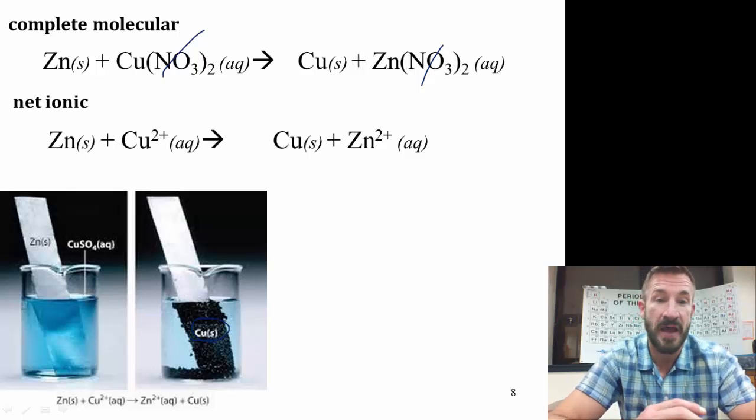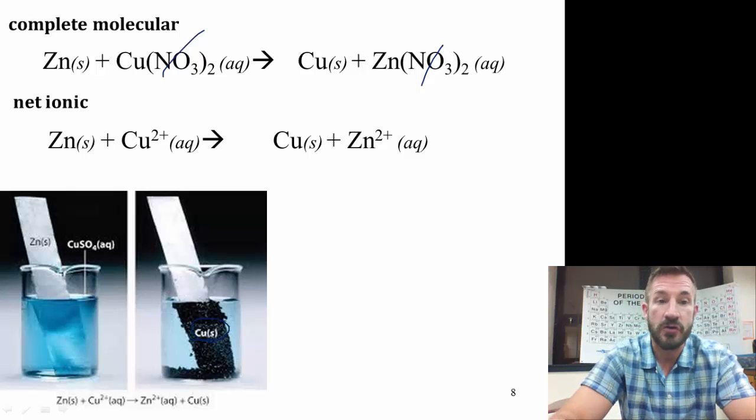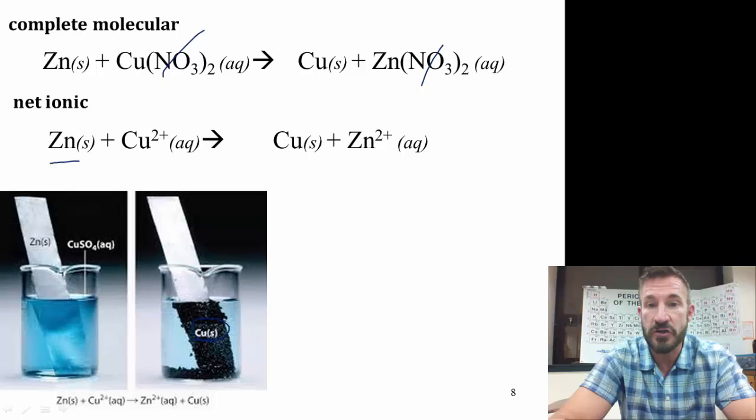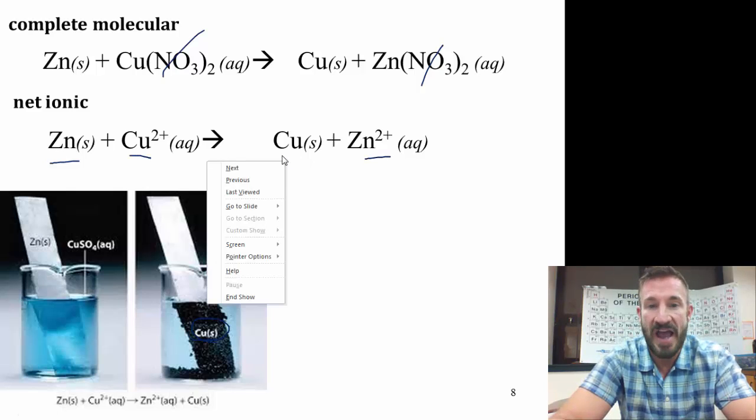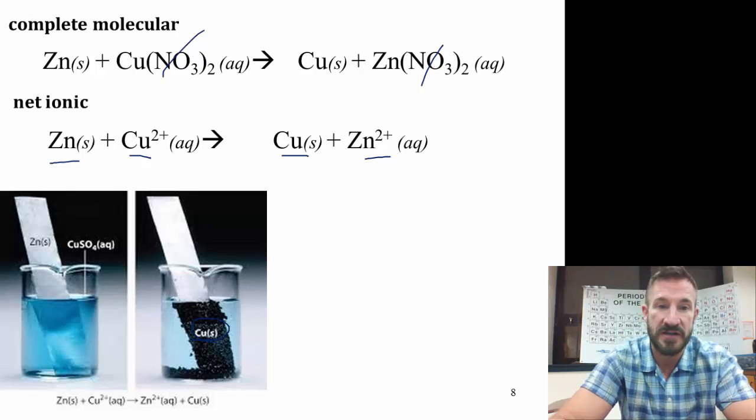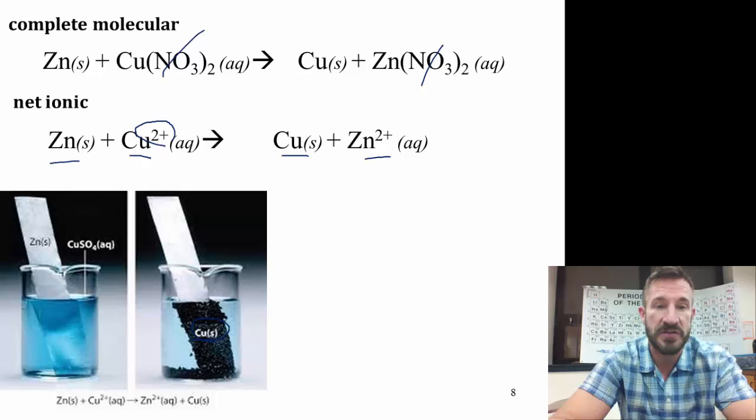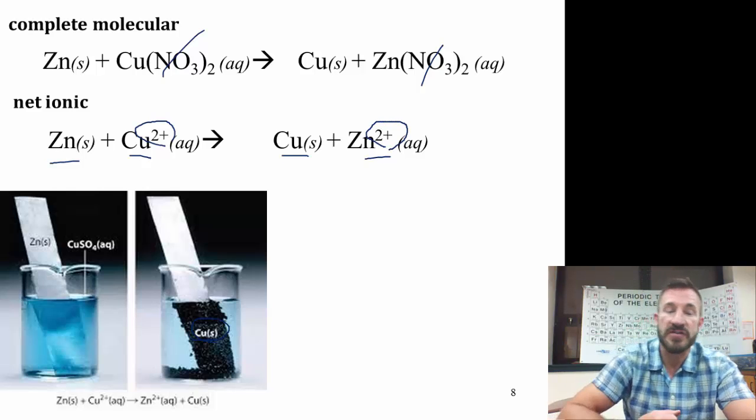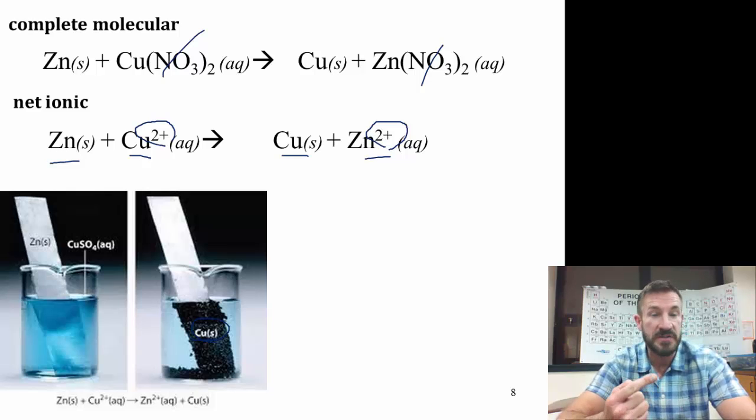And the products for this reaction would be copper and zinc ion. Notice this is important that this is balanced for atom and charge. There is one zinc atom here, there is one zinc atom here. There is one copper atom here, there is one copper atom on the product side. Notice the reactant side has a charge of plus 2. This is 0, this is plus 2. The product side has a charge of plus 2. So this is balanced for the number of atoms and the type of atoms and also for the charge.